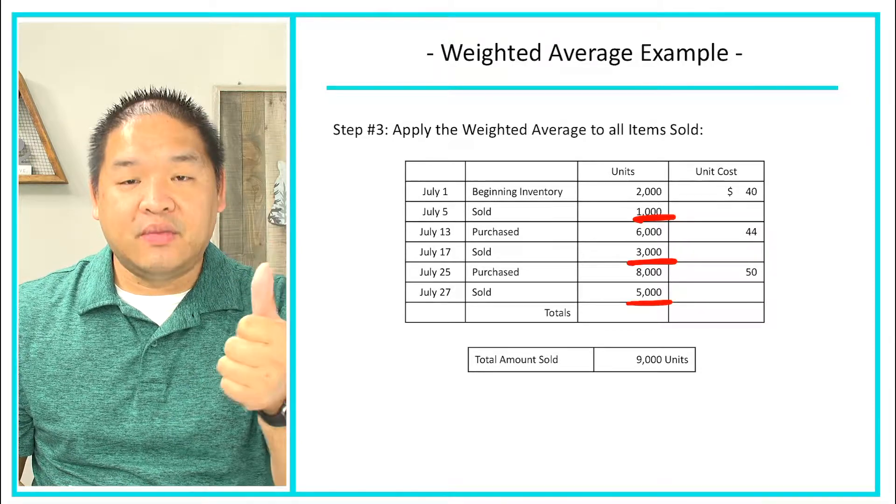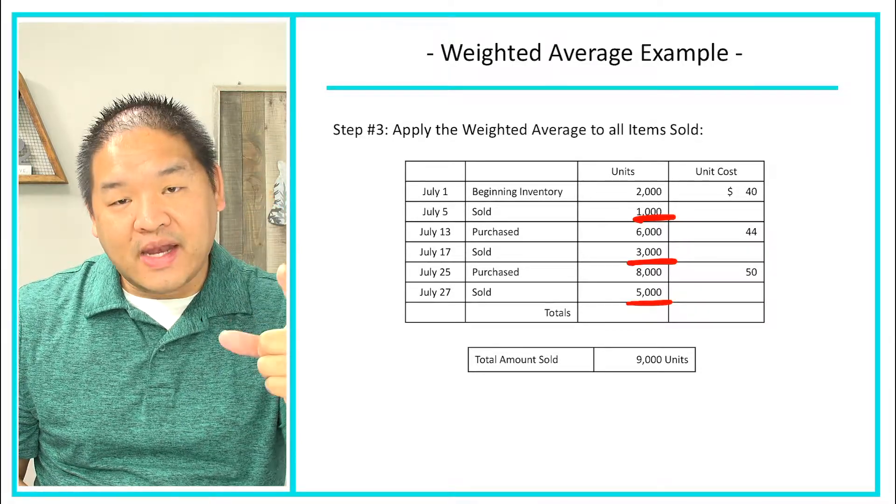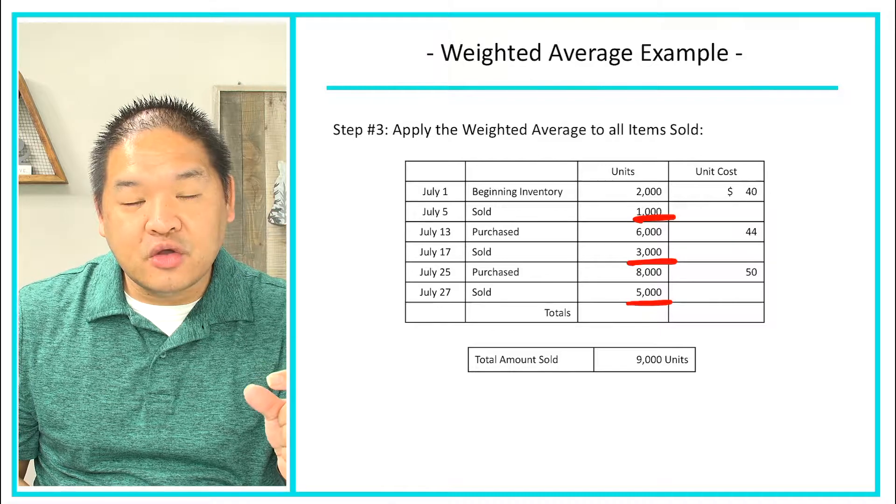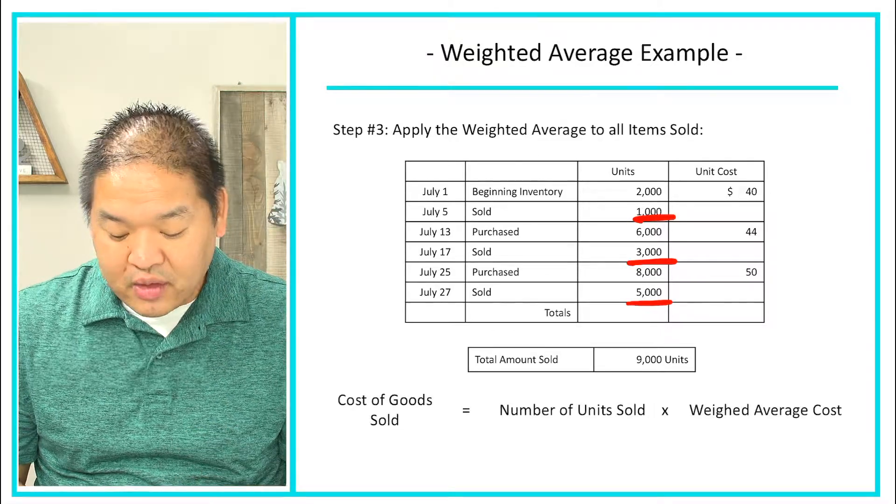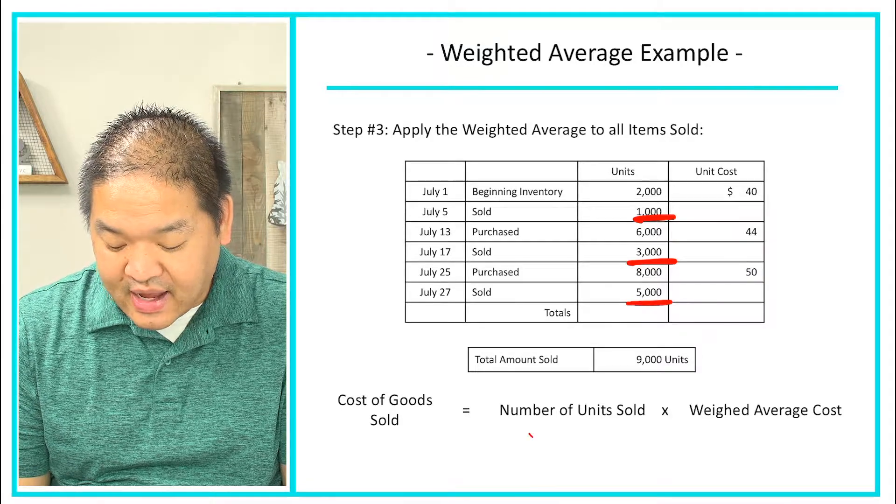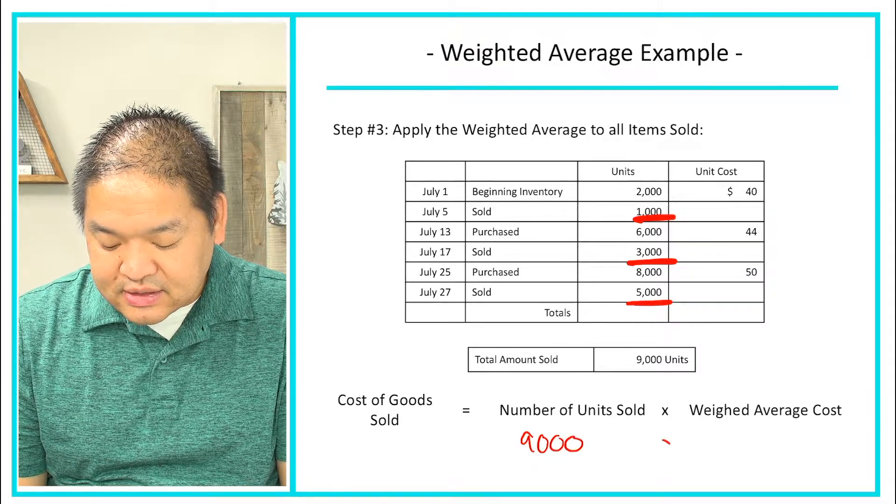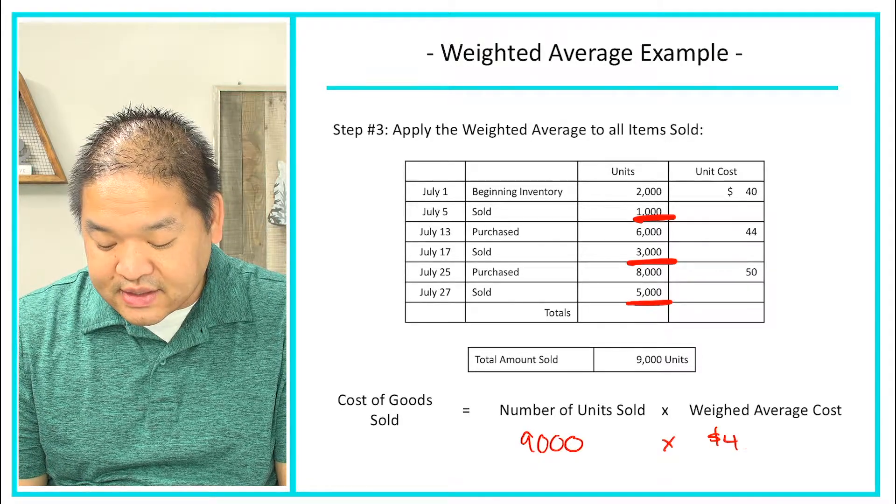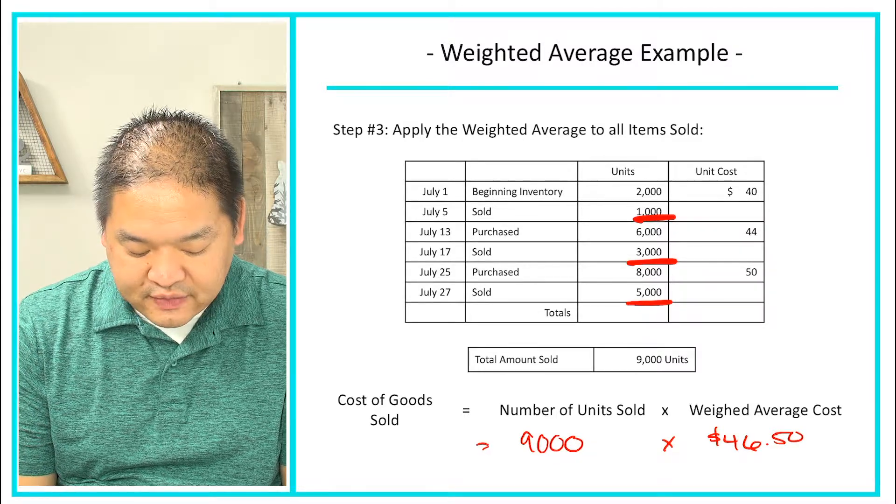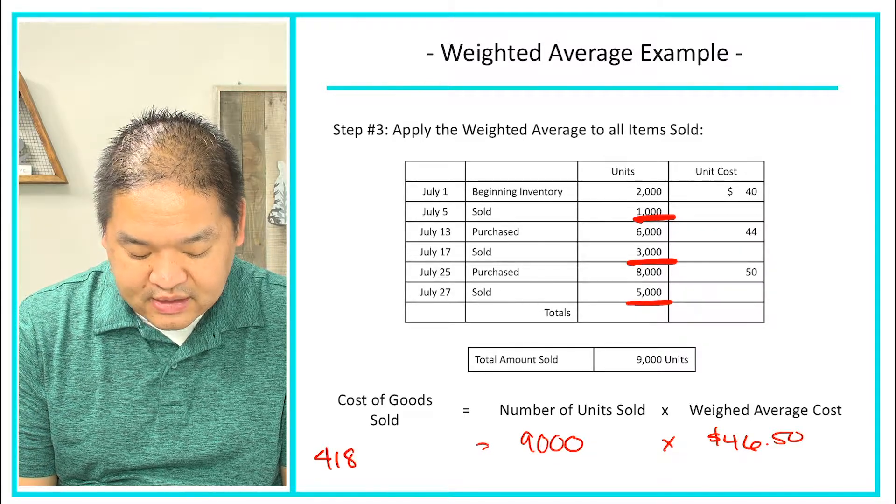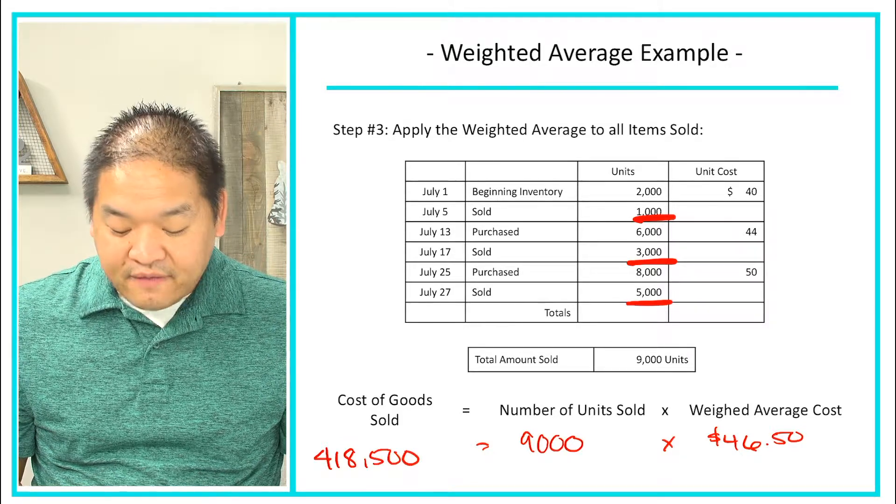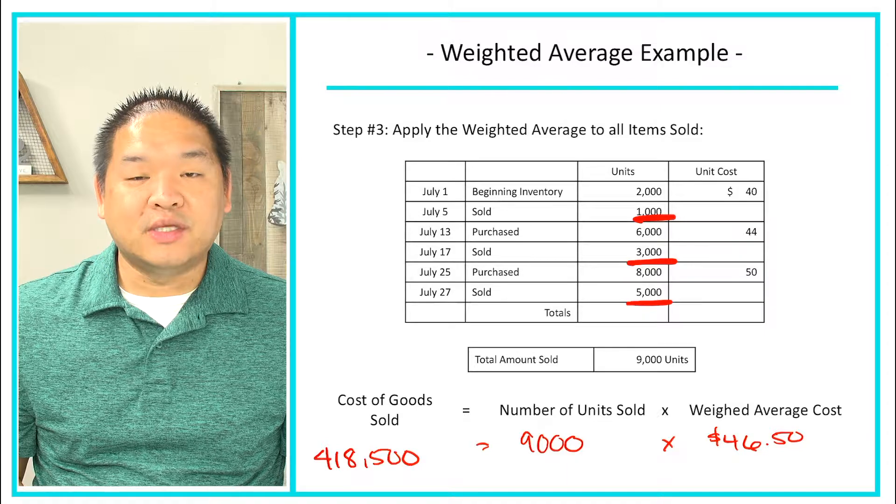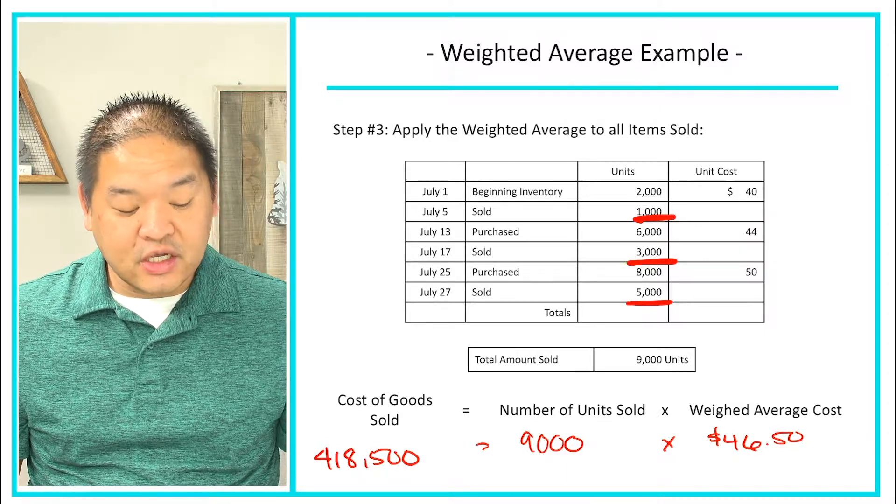So now that we have the number of units that we sold and the weighted average cost, we can then multiply those two to get our cost of goods sold. So we get something that looks like this: 9,000 units times $46.50 gives us a cost of goods sold of $418,500. So $418,500 is going to be our cost of goods sold.